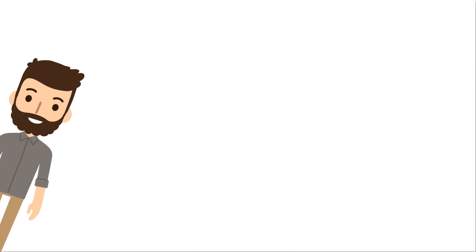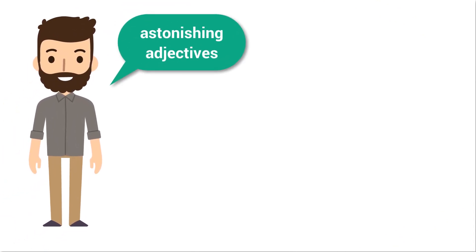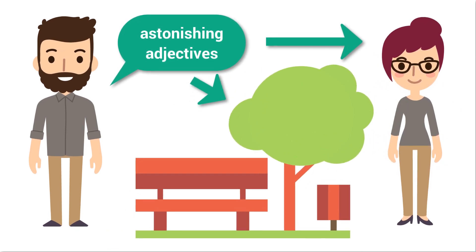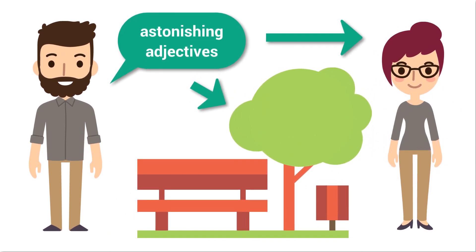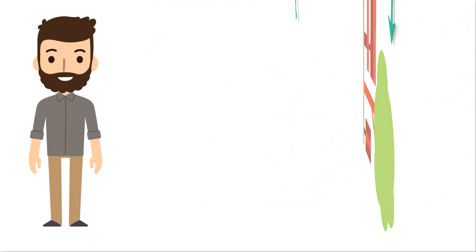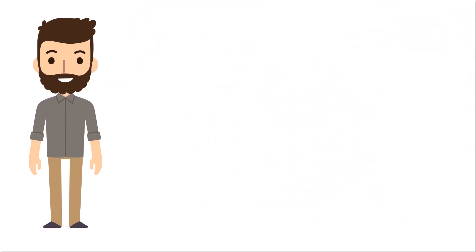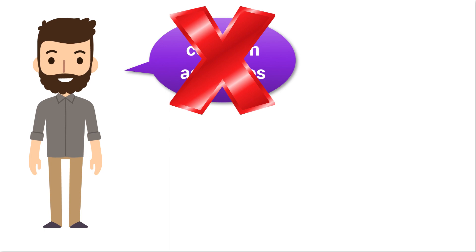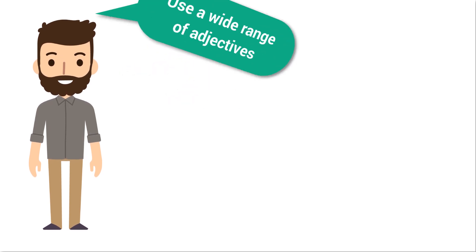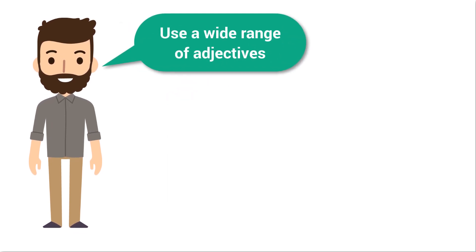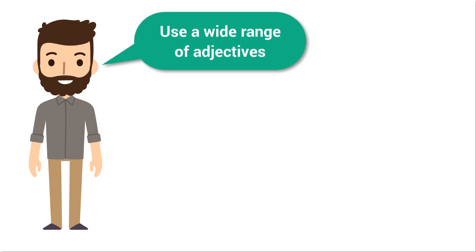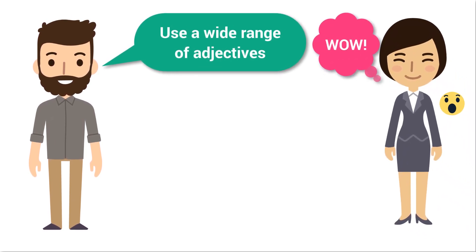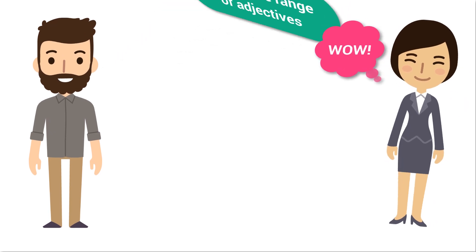In speaking exams, the more varied adjectives you can use to describe someone or something, the higher the score you're gonna get. Of course, you must learn how to use them effectively first. Try to avoid some common adjectives such as 'good' or 'bad'. Instead, you better learn to use a wide range of adjectives. You can start by learning all of the adjectives in this assignment. The examiners will be amazed if you use them in speaking exams.